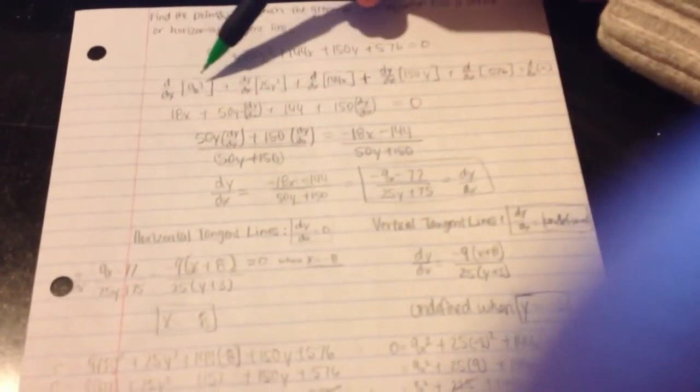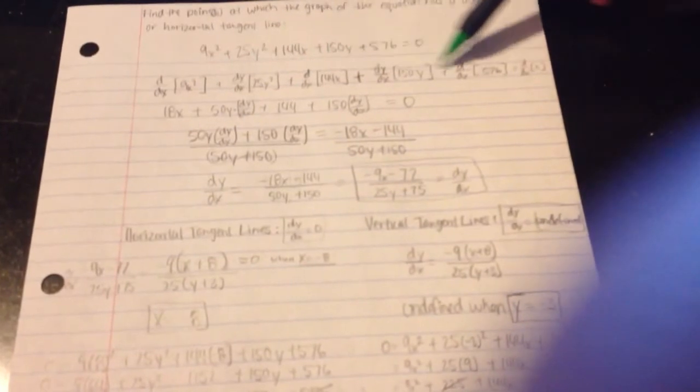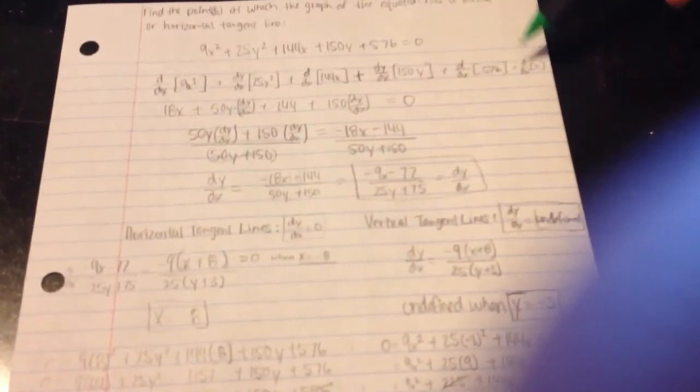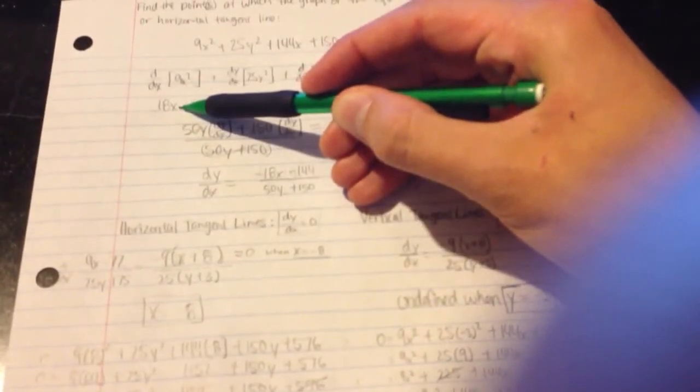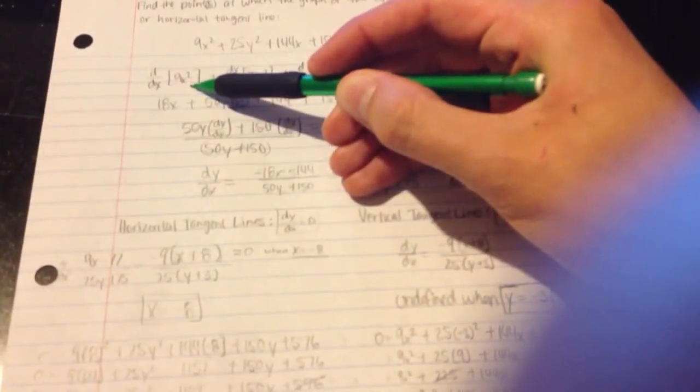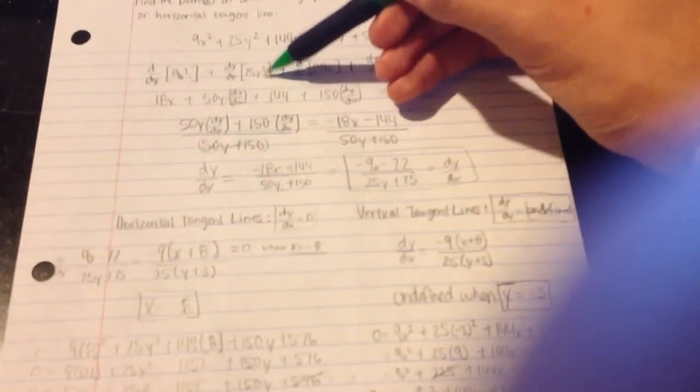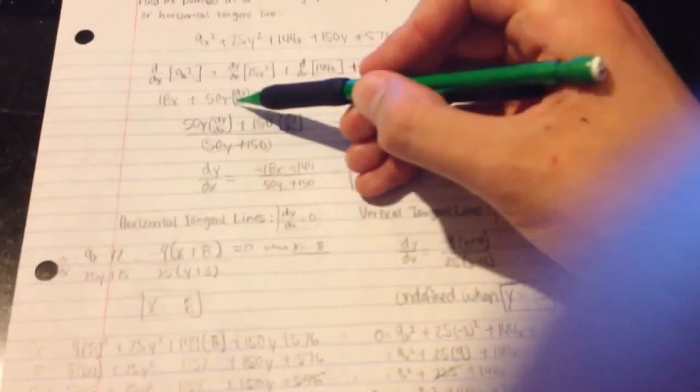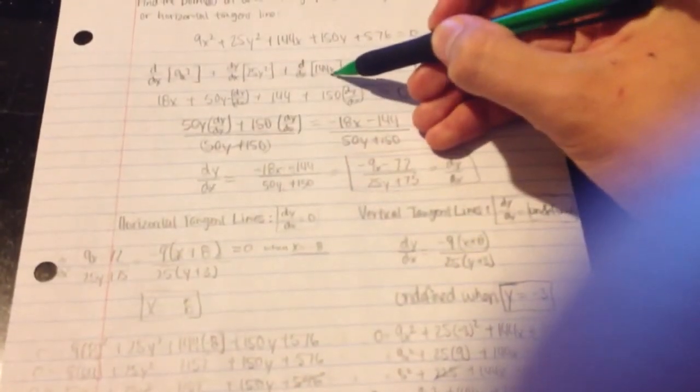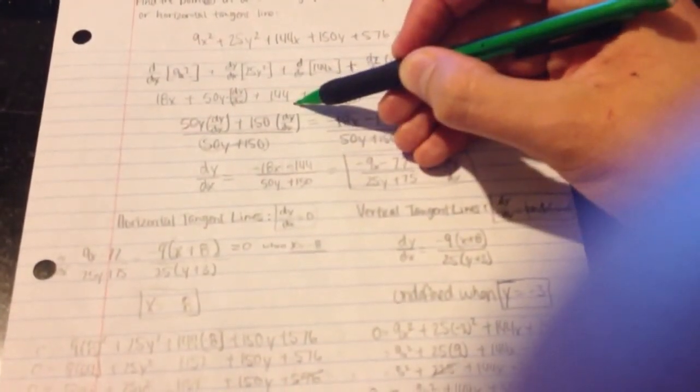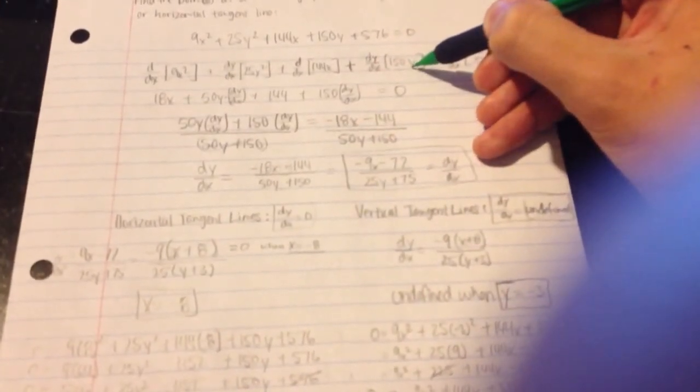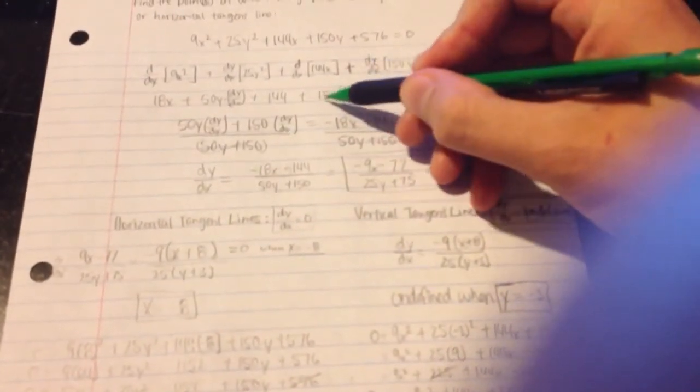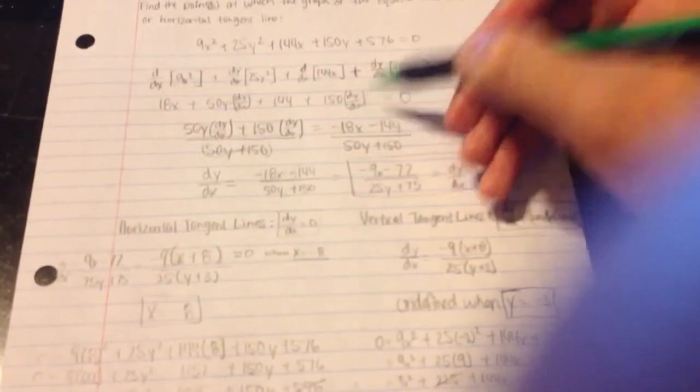Once you've taken the derivative, take the derivative of this one right here. You'll have 18x after you started with 9x squared. 25y squared will leave you with 50y dy dx. 144x becomes 144.